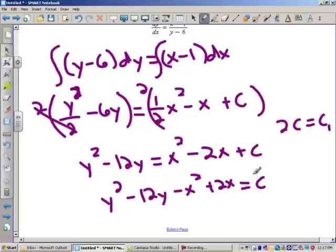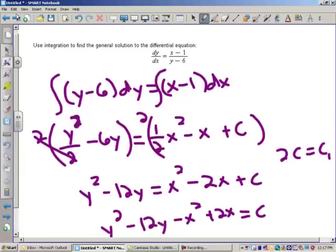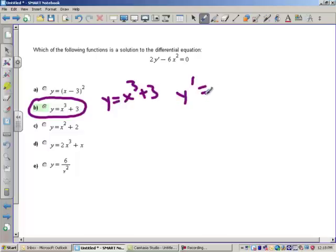So then again, this is just a general solution. Why is it a general solution? Because you did not know a point on the curve. All right, last one. We want to see which one of these is a solution to this differential equation. Here I've got 2y prime minus 6x squared has to equal zero. And I have here bubbled in the correct answer. I want to show you why this is true. Since y equals x cubed plus 3, what is y prime or dy dx? Well, that would be 3x squared.